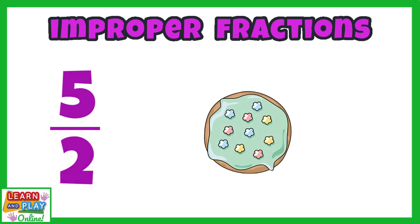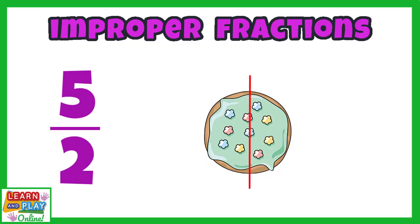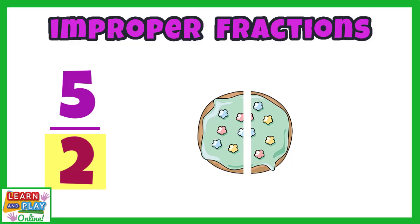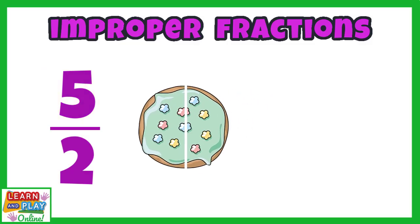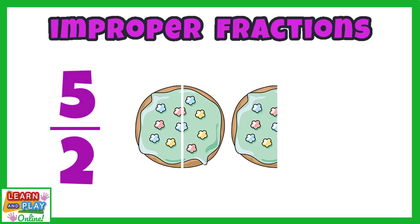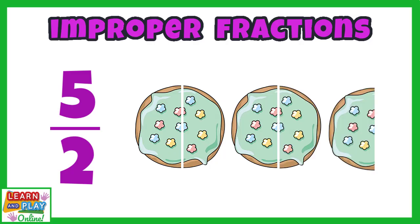Let's use a doughnut to create our visual representation of 5 halves. Here is a whole doughnut. We need to divide this doughnut into halves because our denominator says there needs to be 2 equal parts to make the whole. Our numerator says that we have 5 of these halves, so let's add 3 more halves to make this right. Now you can see that we have all 5 halves of these doughnuts.